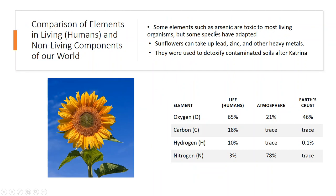Some things are toxic to living organisms, such as arsenic. However, other organisms have adapted — for example, sunflowers can take up lead, zinc, and other heavy metals. They were actually planted after Hurricane Katrina to help detoxify the soil; they'd be pulled up by their roots and disposed of with other contaminated waste. Bacteria, plants, and many other organisms can help decontaminate our environment.